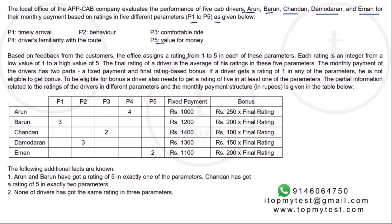Based on feedback from customers, the office assigns a rating from one to five in each of these parameters. Each rating is an integer from a low value of one to a high value of five — so everyone gets a star rating: one star, two star, three star, four star, or five star. The overall rating does not have to be an integer — it can be 4.3 or 2.8.